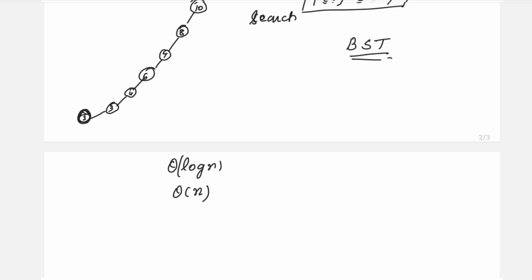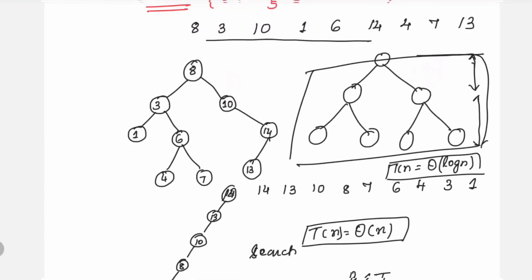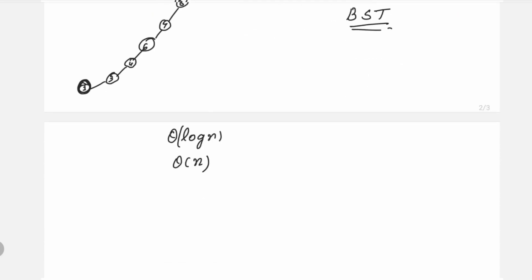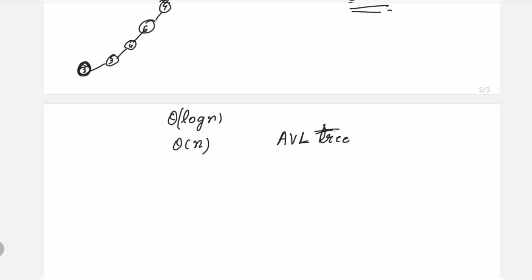The height of the tree also depends on the order of elements in which they are placed. In one example we saw the height is 2, whereas in the skewed example the height is n minus 1. This problem can be solved by two approaches: the first is the AVL tree and the second is the 2-3 trees.